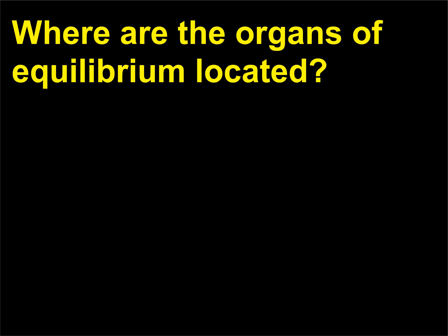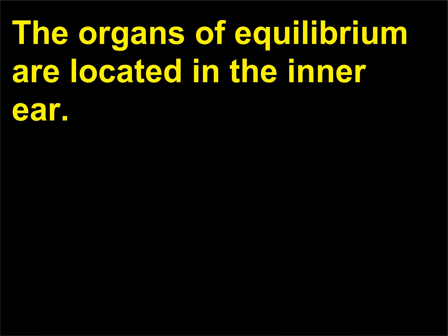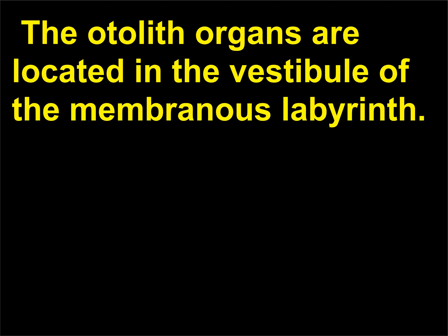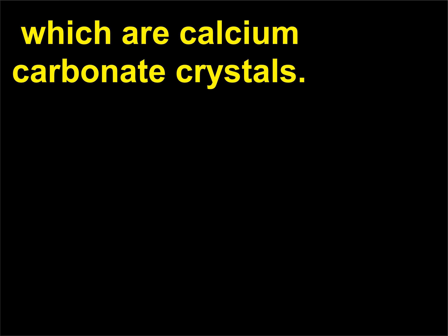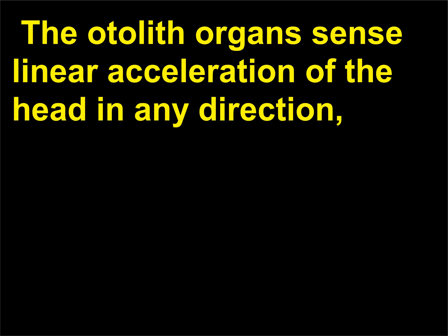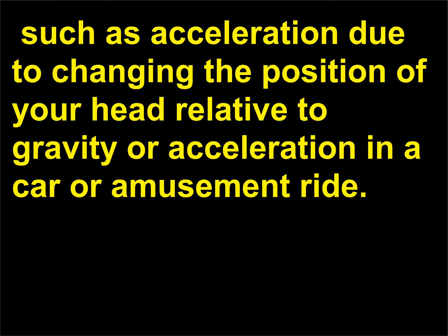Where are the organs of equilibrium located? The organs of equilibrium are located in the inner ear. The otolith organs are located in the vestibule of the membranous labyrinth. They consist of sheets of hair cells covered by a membrane that contains otoliths — ear stones — which are calcium carbonate crystals. The otolith organs sense linear acceleration of the head in any direction, such as acceleration due to changing the position of your head relative to gravity, or acceleration in a car or amusement ride.